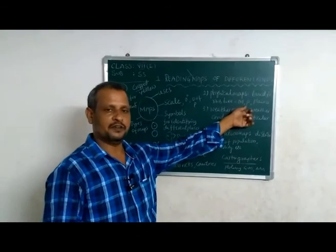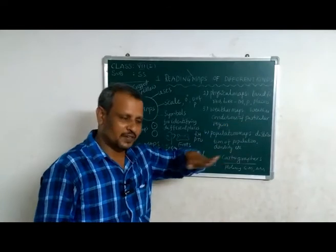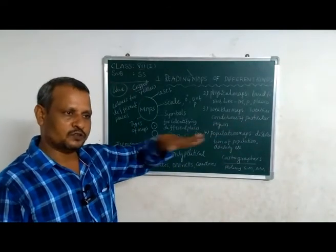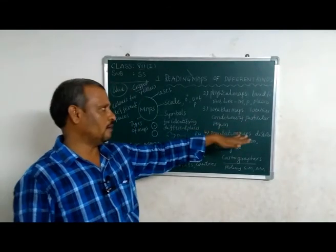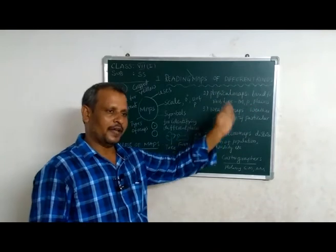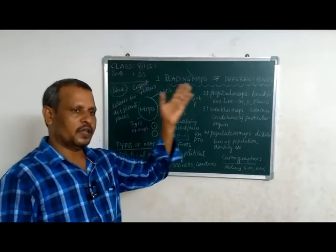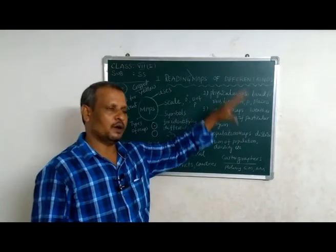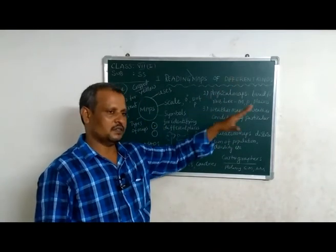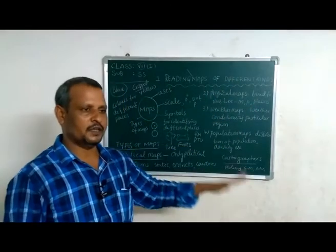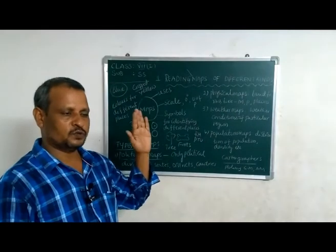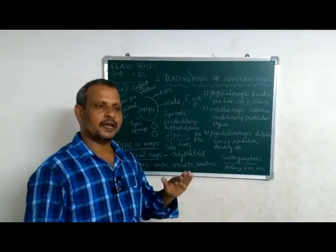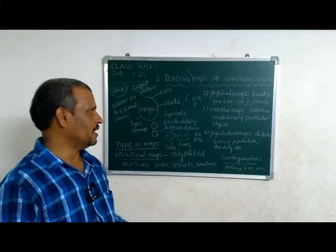Plateaus are elevated flat areas and are not suitable for human habitation. Plains, on the other hand, are thickly populated because they are horizontal and flat. Plains are suitable for irrigation and cultivation.